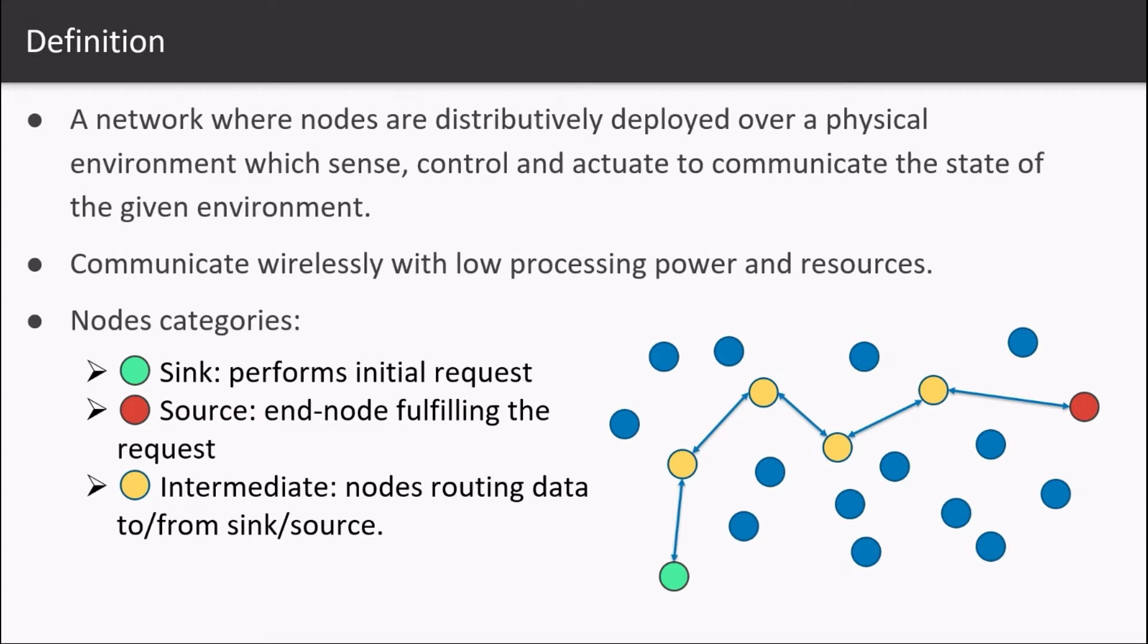So the sink node, indicated in green, is actually interested in receiving the data from the network and is the one that initiates the request to get interested data. It may be a part of the wireless sensor network itself or an external entity which is located outside of the network. All the data collected by the sensor node are forwarded to the local sink node.